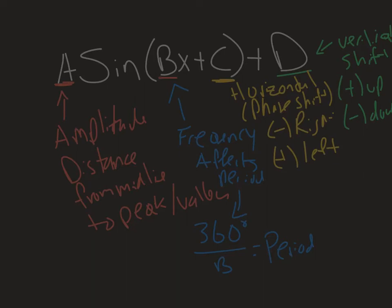We can use all of these — the amplitude, the frequency, the horizontal shift, the vertical shift — and all this thinking applies to cosine as well. Cosine just looks a little bit different than sine in terms of where it starts, but otherwise all this thinking applies. So for the most part these two can be used interchangeably; it just changes where you start.